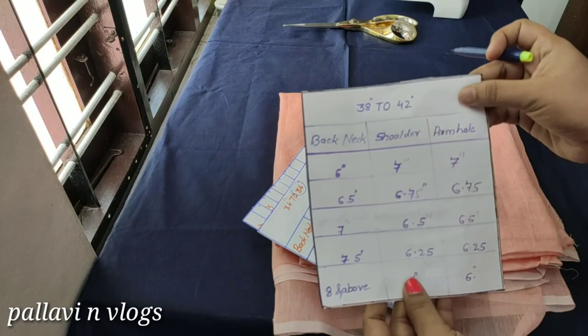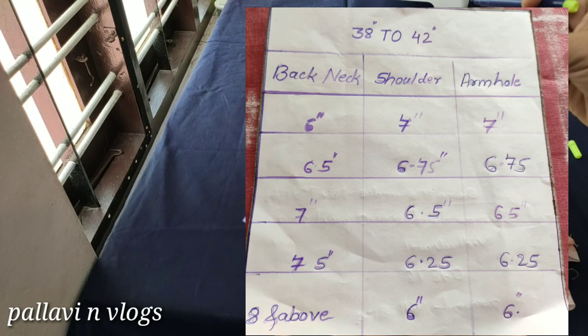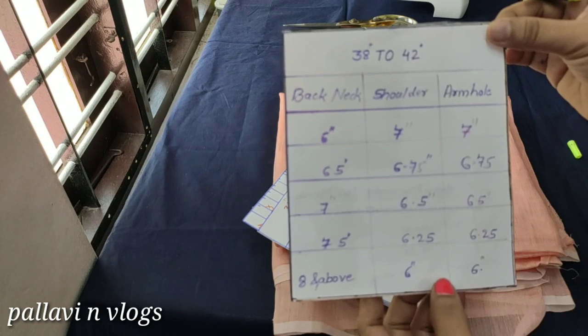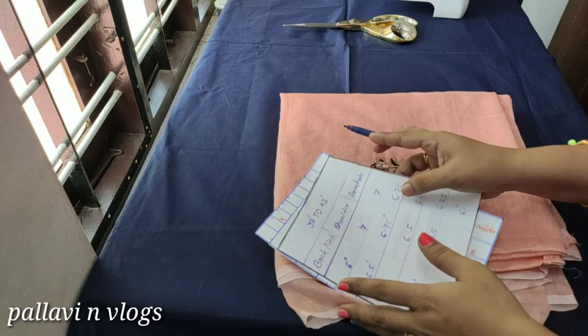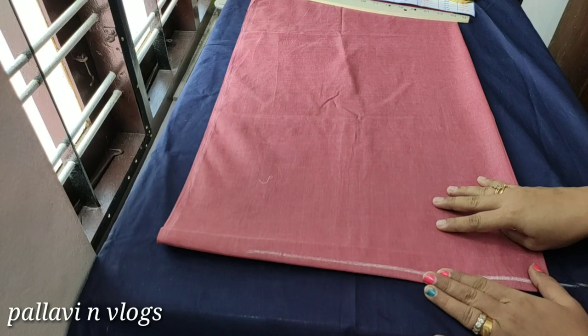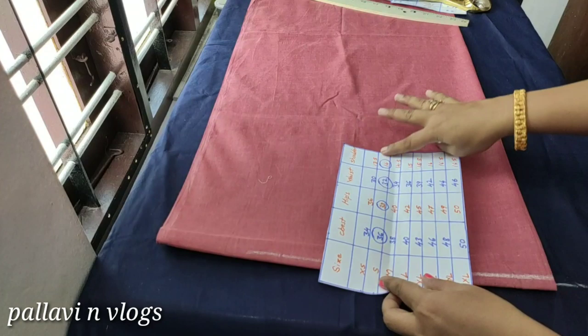I'll show you a screenshot of how to do this cutting. This is 42-44 size for the shoulder. This is our back neck, this is our shoulder, and this is our armhole. I'm going to cut out a single piece. I cut the front part and the back. I have used 4 inches.